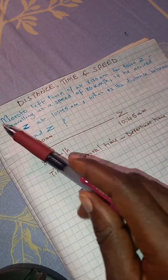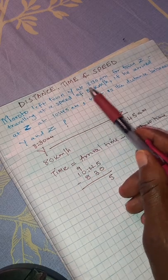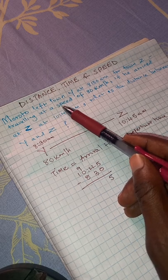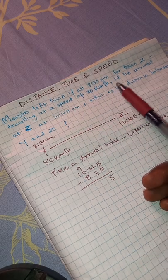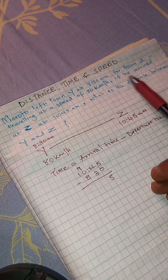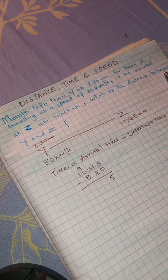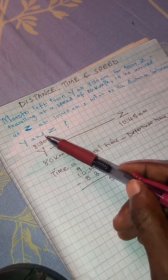Our question for today: Maroto left town Y at 8:30 AM for town Z, traveling at a speed of 80 kilometers per hour. If he arrived at Z at 10:45 AM, what is the distance between town Y and Z?